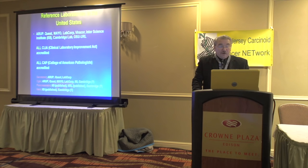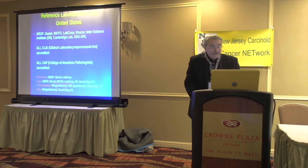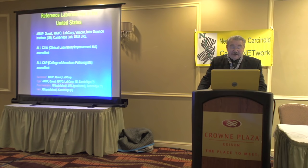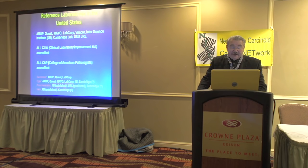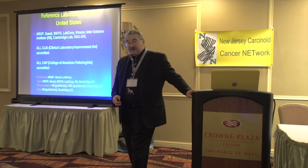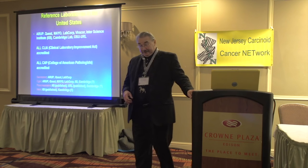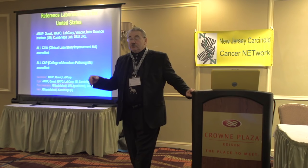These are the reference labs — not making a pitch for any of them, just noting they're commercially available. Reference labs for serotonin include Arup, Quest, Mayo, LabCorp, VeraCorp, InterScience Institute, Cambridge Labs, and OSU. They're all approved and certified. For chromogranin A, you can see the list. For pancreastatin: ISI has the published one, Cambridge isn't published there, and the university reference lab at Ohio State is published — so three sources. For neurokinin A, the only one I'm aware of that has it is InterScience Institute; turnaround is about two weeks. If you have a mid-gut tumor, I would suggest those three tests: pancreastatin, chromogranin A, and neurokinin A.